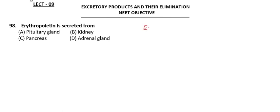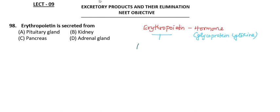Question 98: Erythropoietin is secreted from — pituitary gland, kidney, pancreas, or adrenal gland? Erythropoietin is a glycoprotein cytokine hormone produced by the kidneys in response to hypoxia conditions — that is, inadequate amount of oxygen in the body.